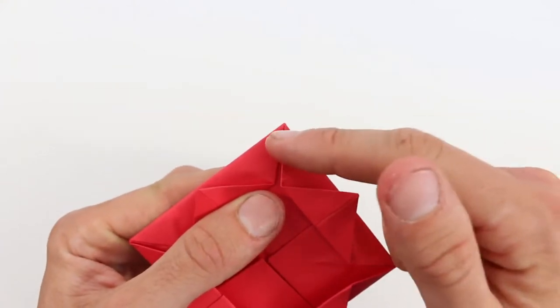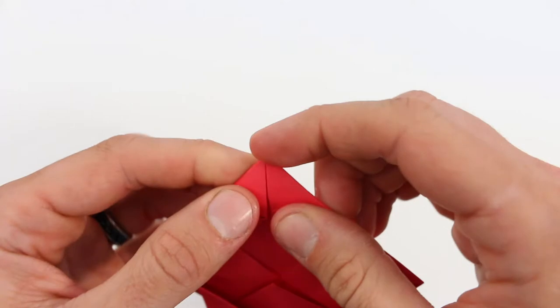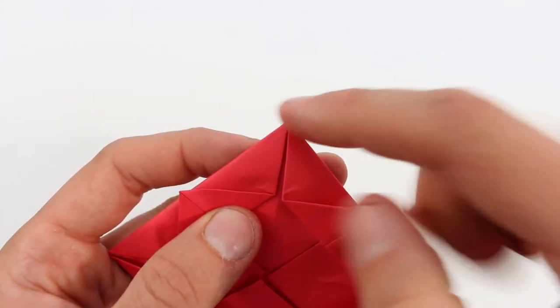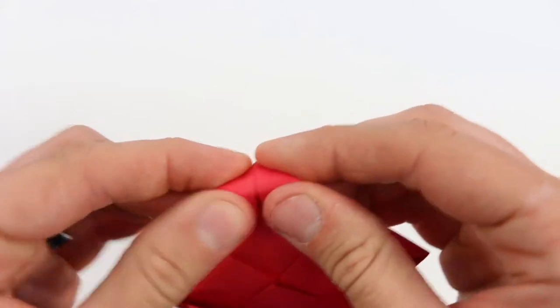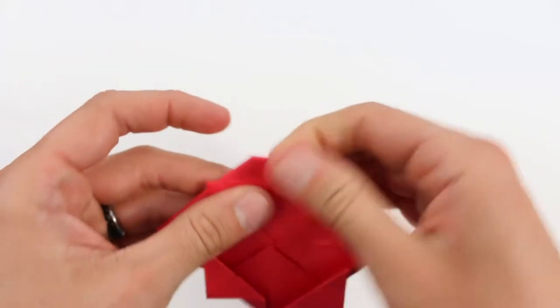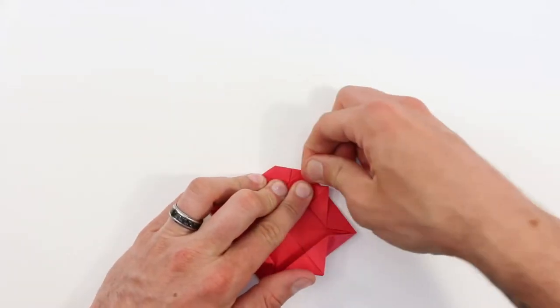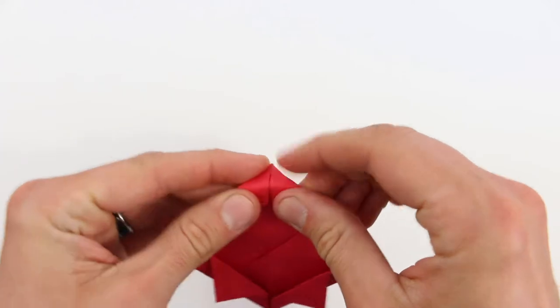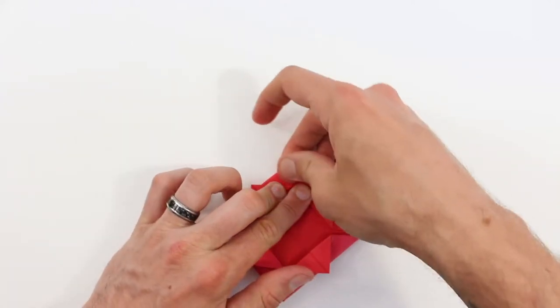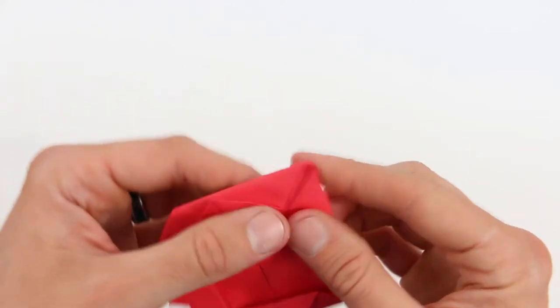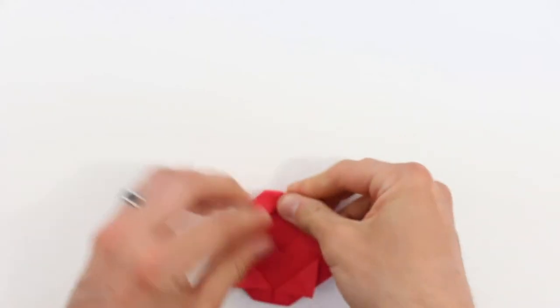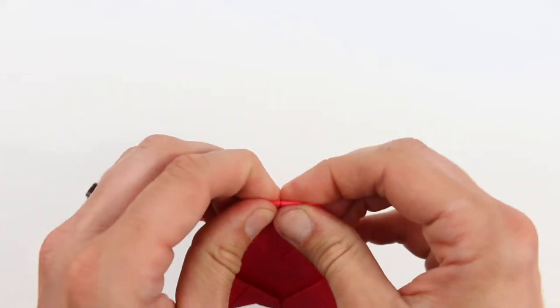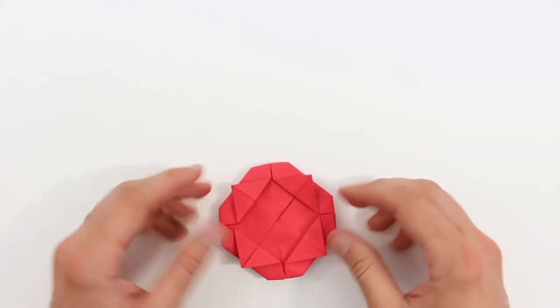Next we're going to take one of these points. We're going to mountain fold it back behind. And we're going to fold it about halfway between this point and this point. Just fold it behind like that and then crease it down. Then we'll do the same thing with the other three. So I'm going to rotate as I do this. Then it should look like that.